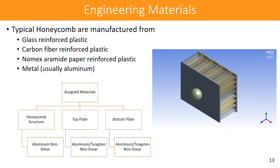For material assignment, the literature has used materials such as glass-reinforced plastic (GRP), carbon fiber reinforced plastic (CFRP), Nomex aramid paper reinforced plastic, and aluminum honeycomb. I assigned aluminum nonlinear material to the honeycomb structure. For the top and bottom plates, I varied between aluminum and tungsten nonlinear materials. All materials were assigned through the Engineering Materials Library in ANSYS.